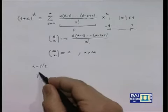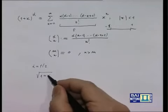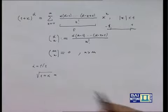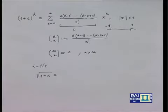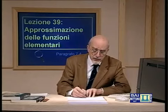Questa serie binomiale contiene come caso particolare la formula del binomio, ma ne costituisce una evidente generalizzazione. Ad esempio, se alfa fosse un mezzo la funzione sarebbe la radice di (1+x). Noi già trovammo il polinomio T₂: era 1 + x/2 - x²/8. Vediamo se lo ritroviamo con i nostri simboli.